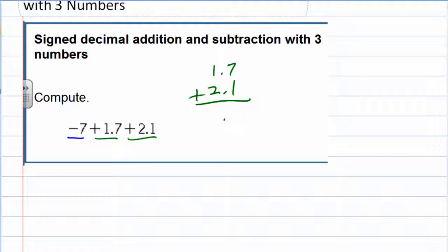Lining up the decimals gives us 8 and 3, so 3.8. I can replace that 1.7 plus 2.1 in our question to actually make it a little bit easier.